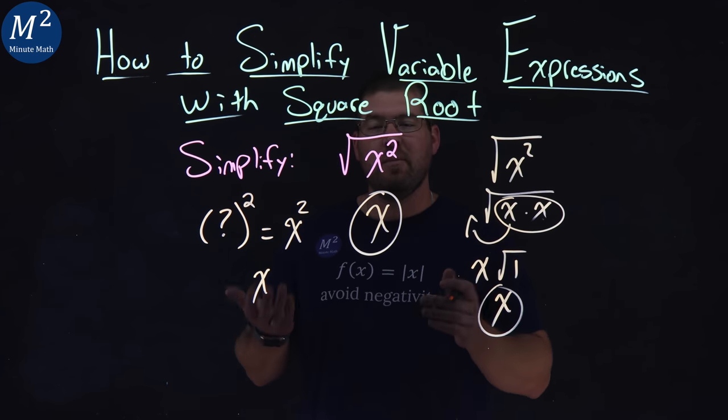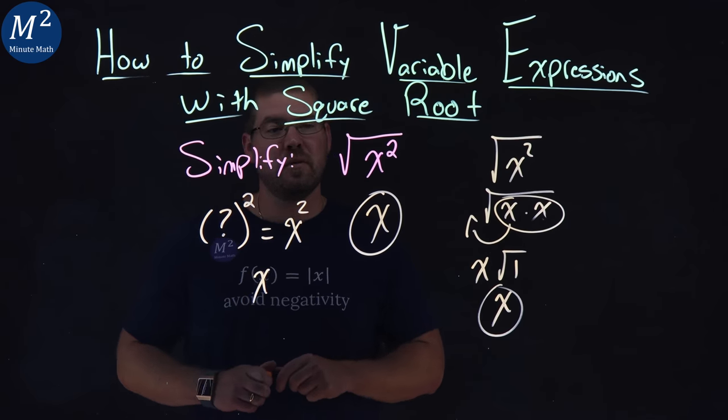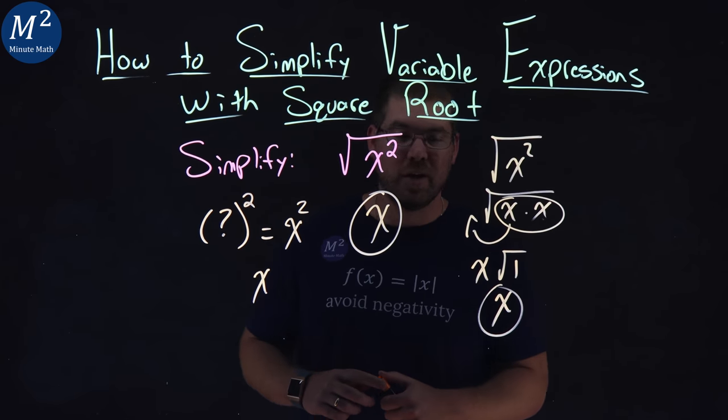You can think about it either way, but either way, when you simplify the square root of x squared, you get x.